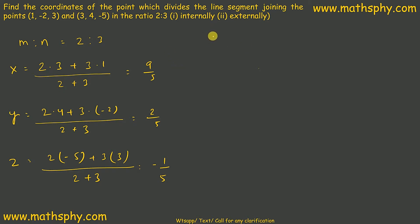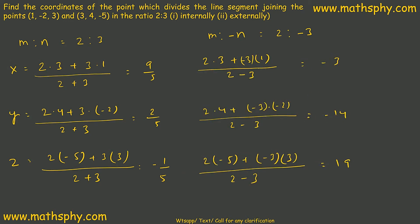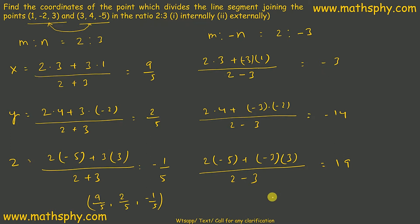For external division, M is 2 and negative N means the ratio is 2 to −3. In case of internal division, the point of coordinates splitting the line joining these two points is (9/5, 2/5, −1/5) — this point splits the line in the ratio 2:3 internally. For external division, the point is (−3, −14, 19) — this point splits the line joining the two given points in the ratio 2:3 externally.